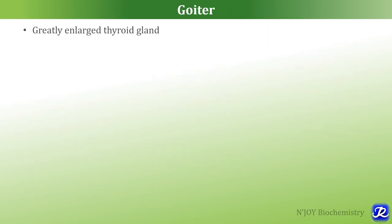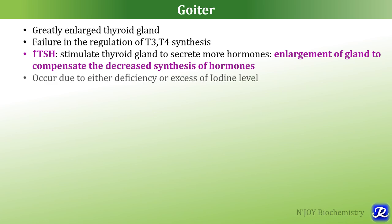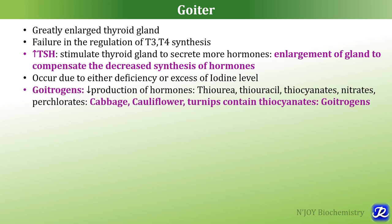Goiter is greatly enlarged thyroid gland. It occurs due to failure in the regulation of T3 and T4 synthesis — whenever TSH is increased, it stimulates the thyroid gland to secrete more hormones and leads to gland enlargement to compensate for decreased hormone synthesis. It can occur due to either deficiency or excess of iodine. Goitrogens are substances that decrease production of thyroid hormones — examples include thiourea, thiouracil, thiocyanates, nitrates, and perchlorates. Vegetables like cabbage, cauliflower, and turnips contain thiocyanates, so they are also called goitrogens.